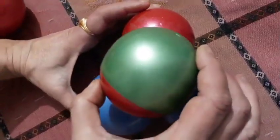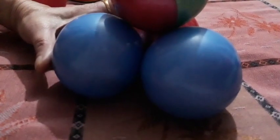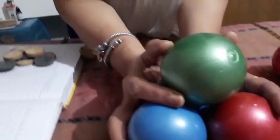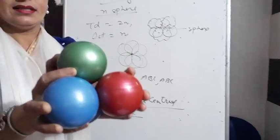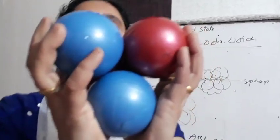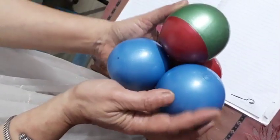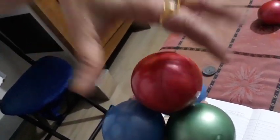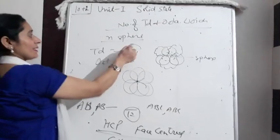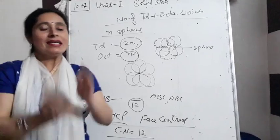Let me demonstrate: three spheres in close touch — place one above and that forms a tetrahedral void. The same sphere also forms a tetrahedral void with the layer above it. So tetrahedral voids = 2n and octahedral voids = n. Stay tuned for the next video, thank you.